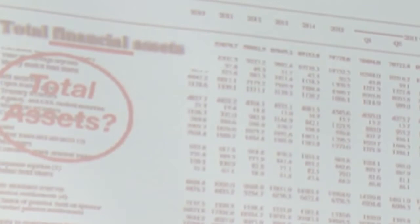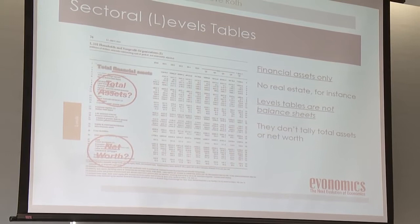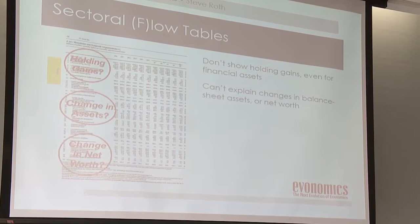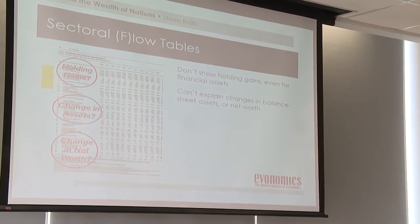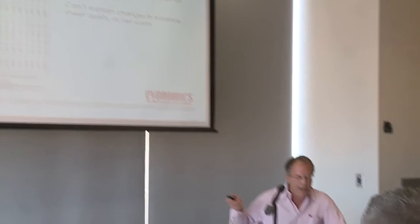Looking at the flow of funds matrix — the first pages of the Z.1 report — it's a summary of flows and levels tables, and everything balances. But the levels tables don't include real assets, only financial assets. They're not balance sheets — they're incomplete. And because flows and levels tables don't tally holding gains, there's no way they can tell you what happened to household assets and net worth.